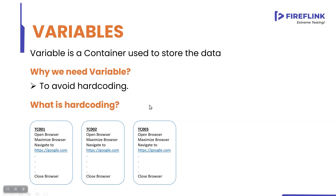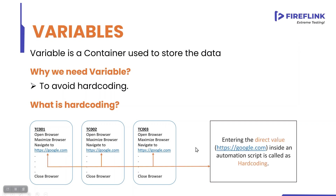I am automating this Google application and I have used step number 3, which is navigate to that particular URL. I have directly entered the value — I have given the direct URL in each and every script. When you give the direct URL or the direct value, that is called hard coding. In your automation script, whenever you enter the direct value, that value is called a hard coded value.